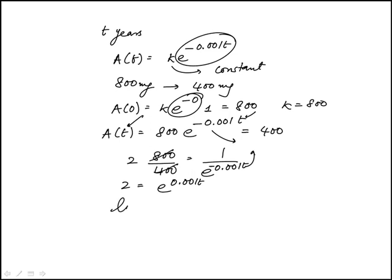So if I take natural log on both sides, that's what t is, so t is ln 2 over 0.001.